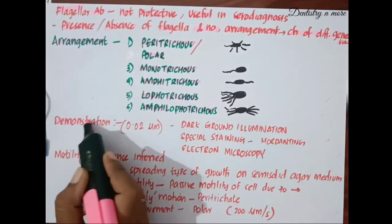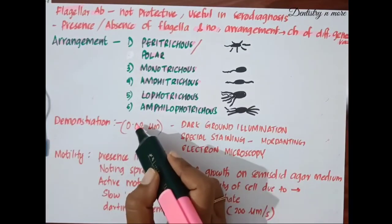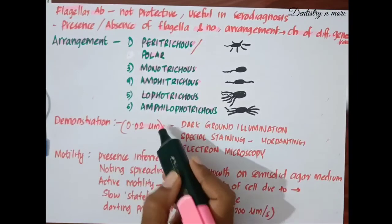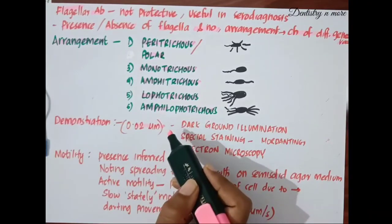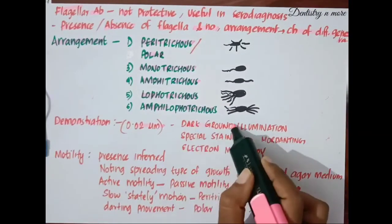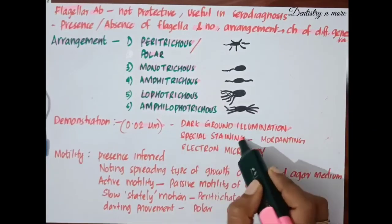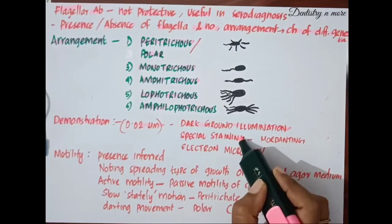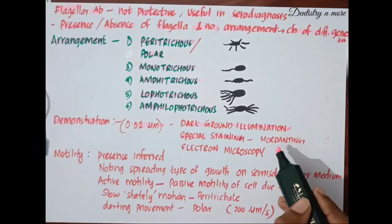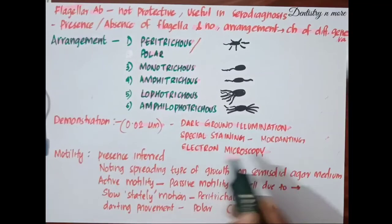Next is how we demonstrate bacterial flagella. Flagella are less than 0.02 micrometers in thickness, hence beyond the limit of resolution of the light microscope. In some instances they may be seen under dark ground illumination. They can be visualized by special staining techniques using mordanting, which increases their thickness. They can also be demonstrated by electron microscopy.